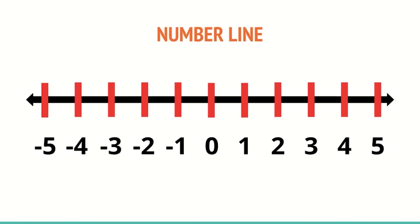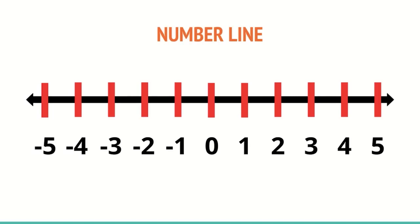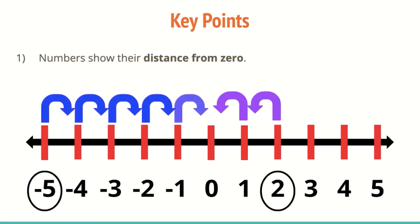This allows us to see the differences visually. So one, if we have numbers show their distance from zero. So if we look, we're at the number two, number two is actually two spaces from zero. And if we look at number negative five, negative five is negative five spaces away from zero.